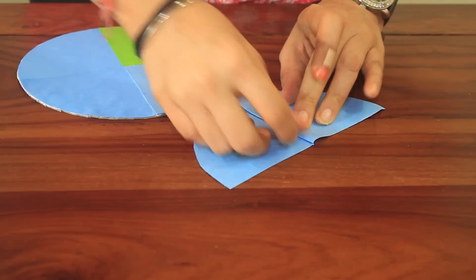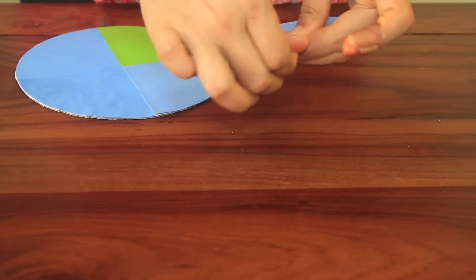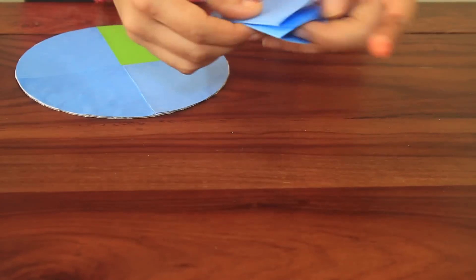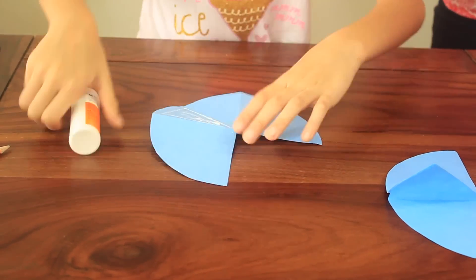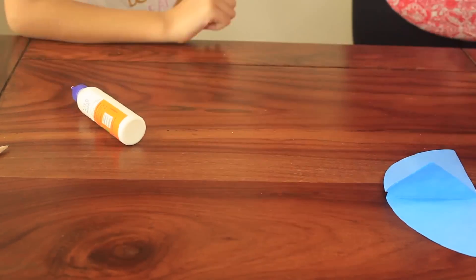Fold it in such a way that it divides the middle quarter into half. Glue the middle quarter as shown in the video. Repeat for all the 4 circles.